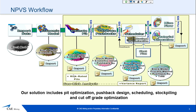The first step in NPVS is that we import our data. All that needs to be is a block model, but we can also import other things such as strings and wireframes. Once that material is in, we do up the economic model, which applies a value to each block. The next stage is the ultimate pit optimisation, which uses the Lerch-Grossman algorithm and the values from the economic model to give you a final pit.